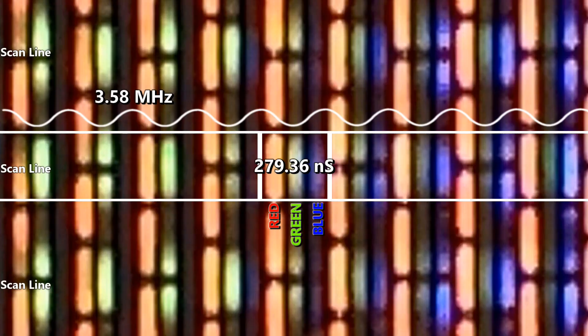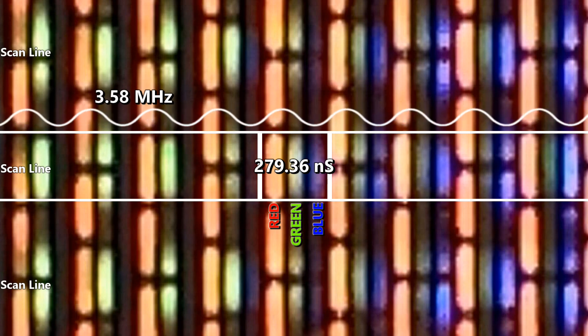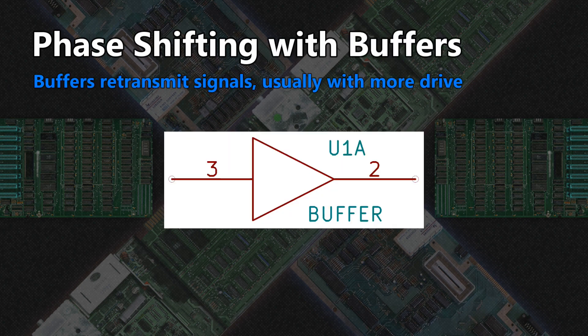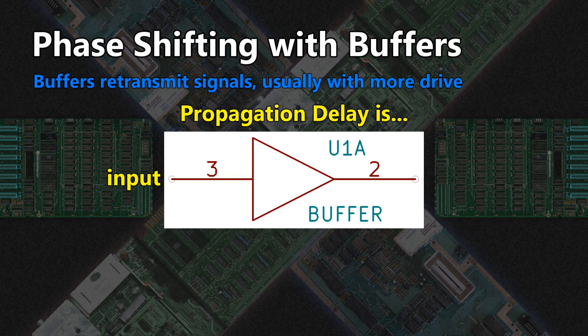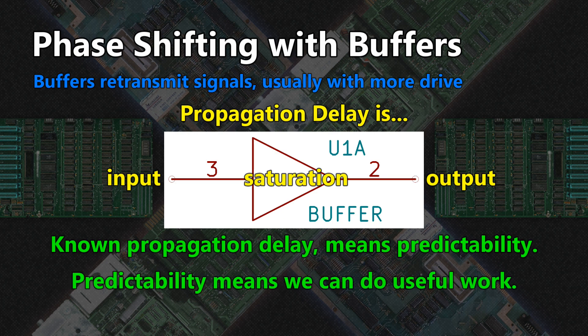I'll reiterate that this is a pedestrian view and not remotely correct, but it works to help you wrap your head around the process. To make colors, we can feed the 3.58 megahertz color reference into a circuit that can delay the signal in time so that the peak rests on the color we want. This is called phase shifting. A simple way to do that is with a string of buffers. A buffer takes an input and pushes it to an output, bringing the signal back up to normal levels. However, it has a phenomenon called propagation delay that we will exploit — this is the delay between when the signal is received and when the semiconductor can saturate enough to turn on the output.